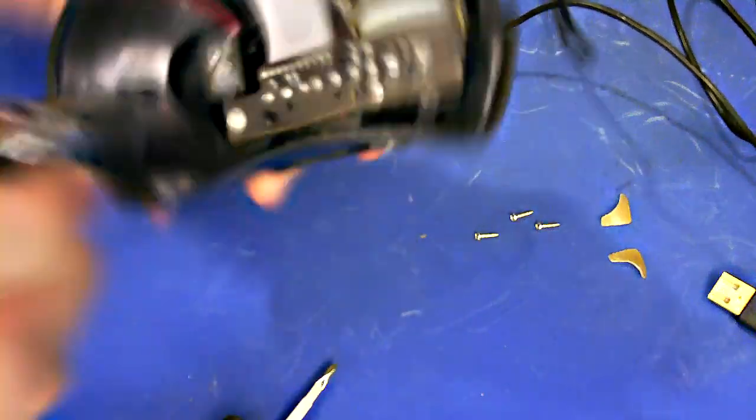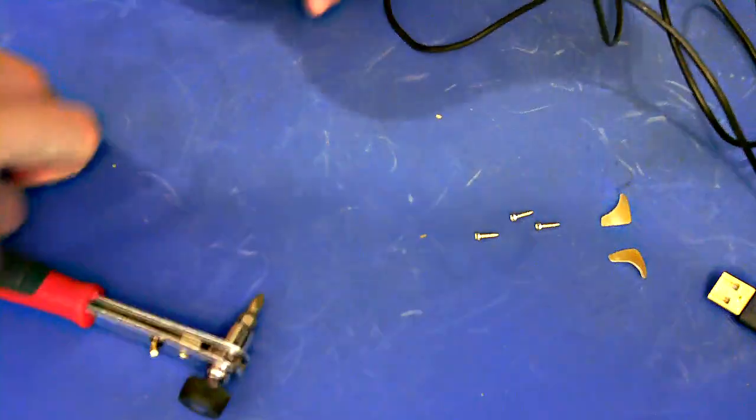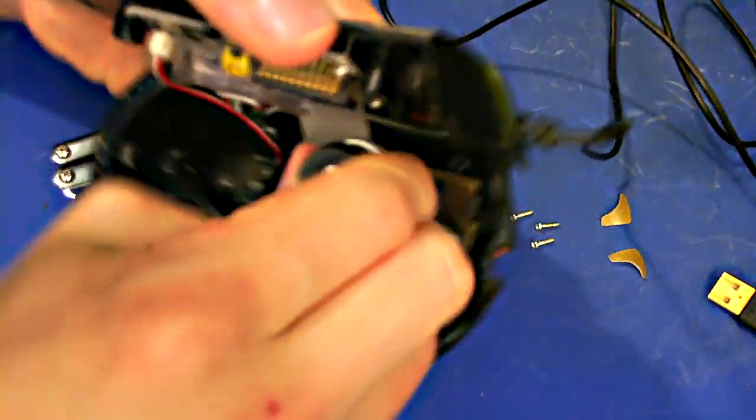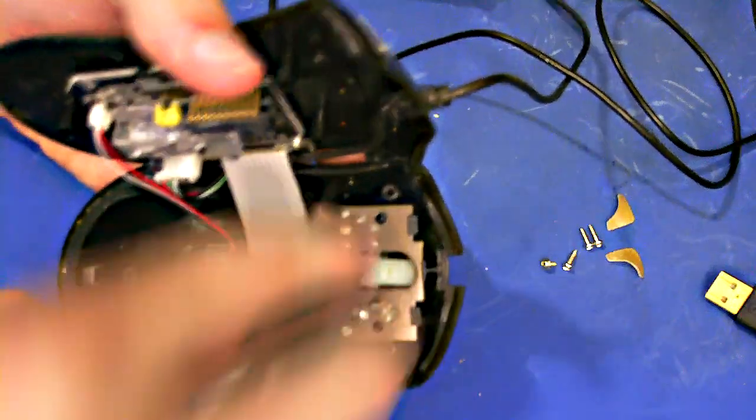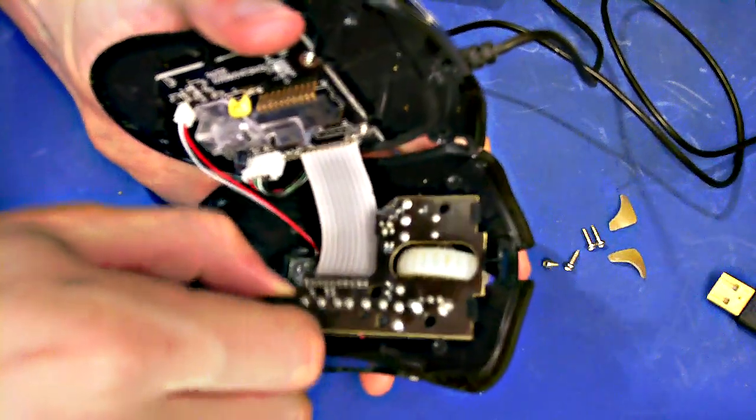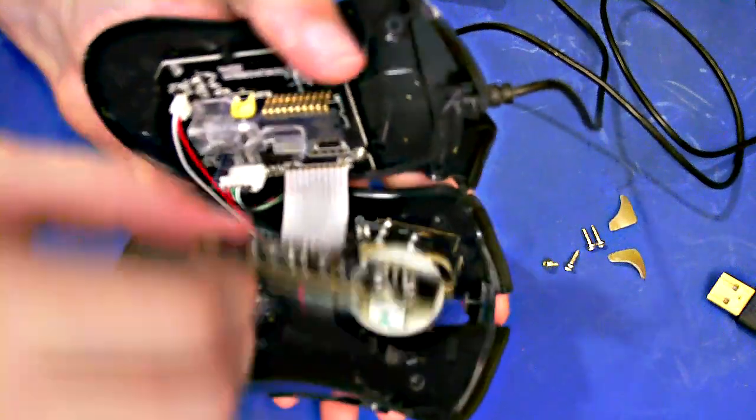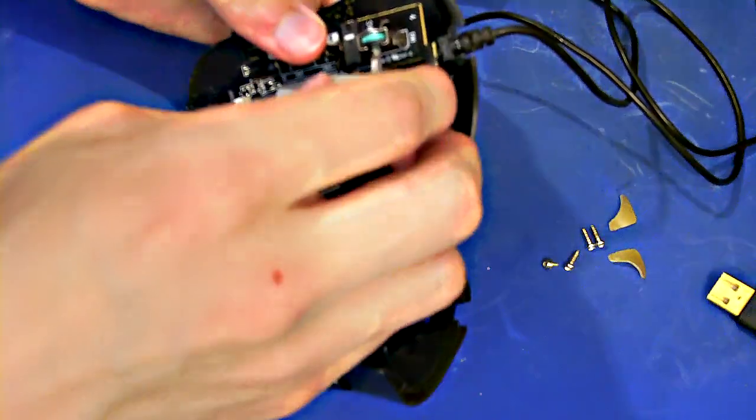There's two screws holding this little board onto the top of the mouse. You're going to want to go ahead and take those off. Now I ordered mine refurbished and so one of my screws would not come off. You can see here it was stripped already when I opened the mouse. So that was a pain. I tried to pull it out and finally I was able to get it out after I used a knife to pry it off.